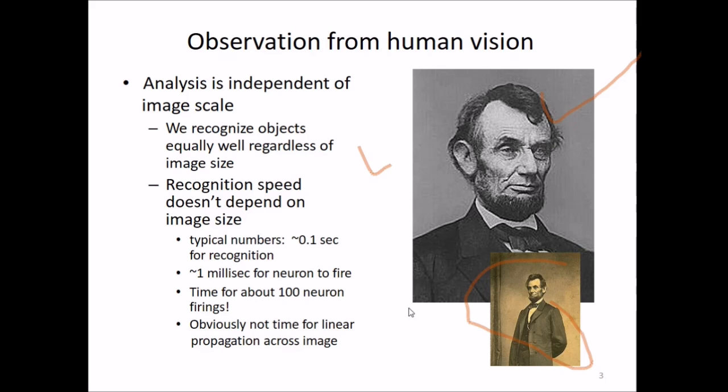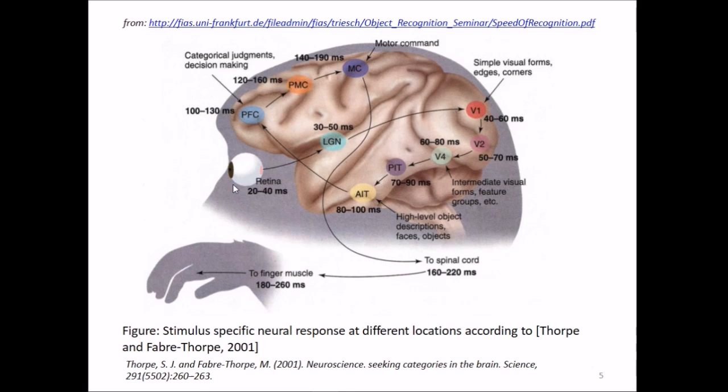Recognition speed doesn't depend on image size. Typical numbers are 0.1 second for recognition and 1 millisecond for neuron to fire. Time for about 100 neurons firing would obviously not allow time for linear propagation across images. There's a famous paper on these effects. Seeing takes 20 to 40 milliseconds, then making visual forms and edges takes additional time.